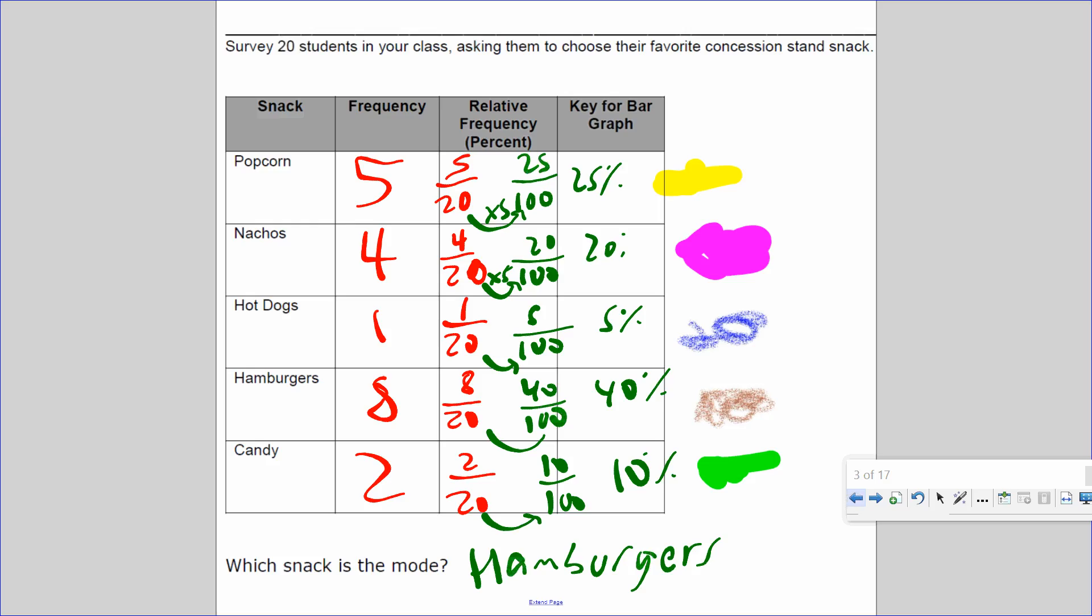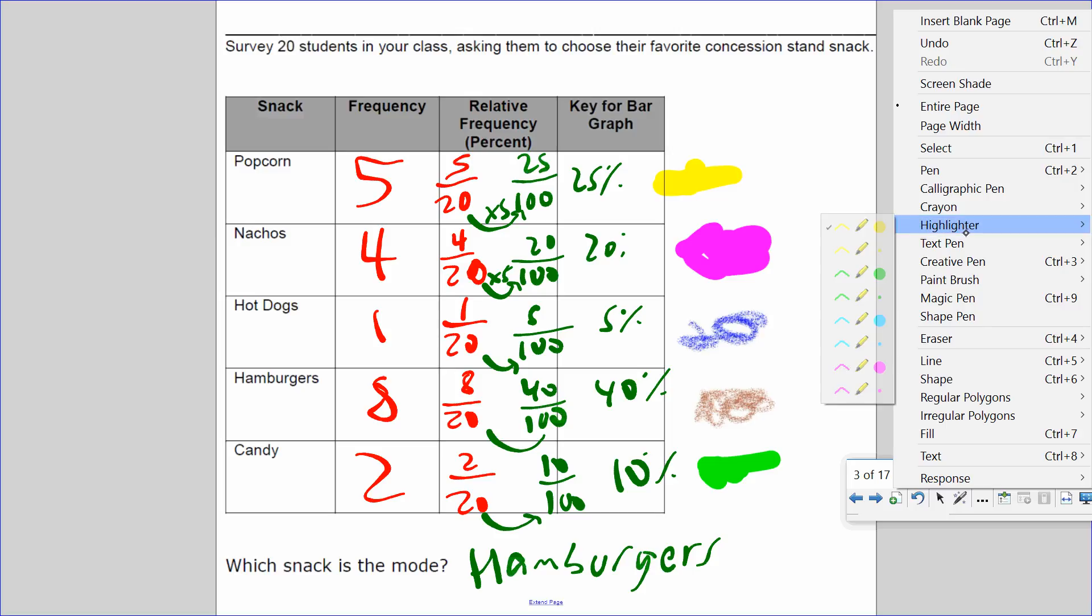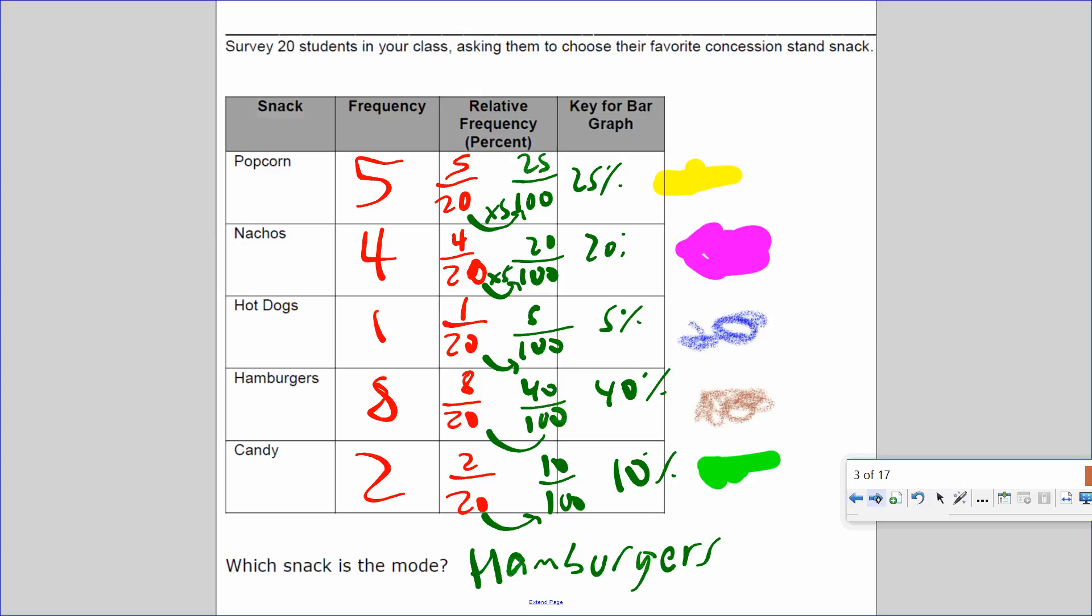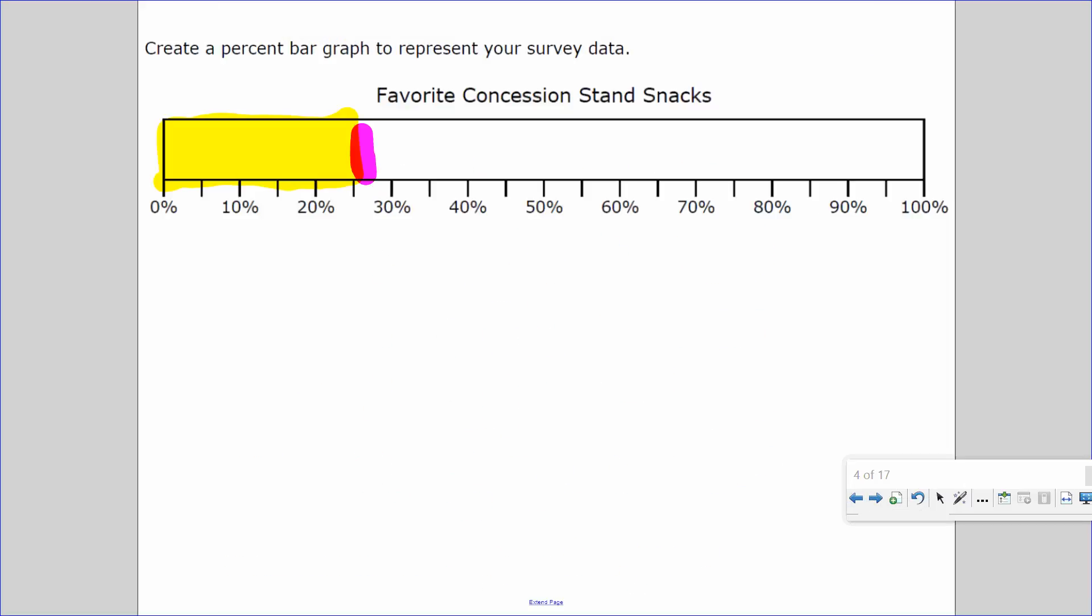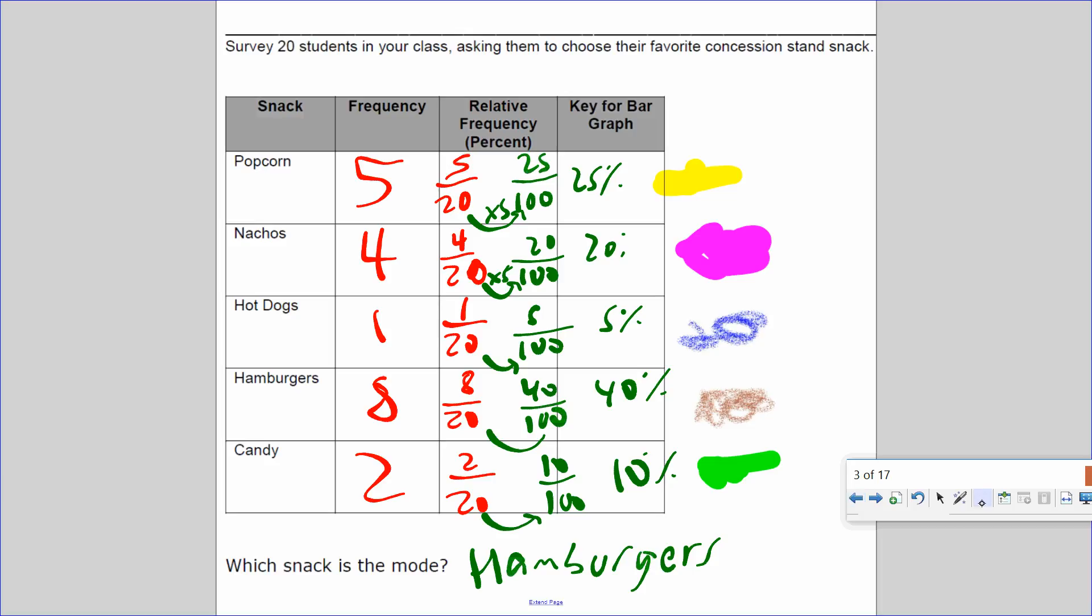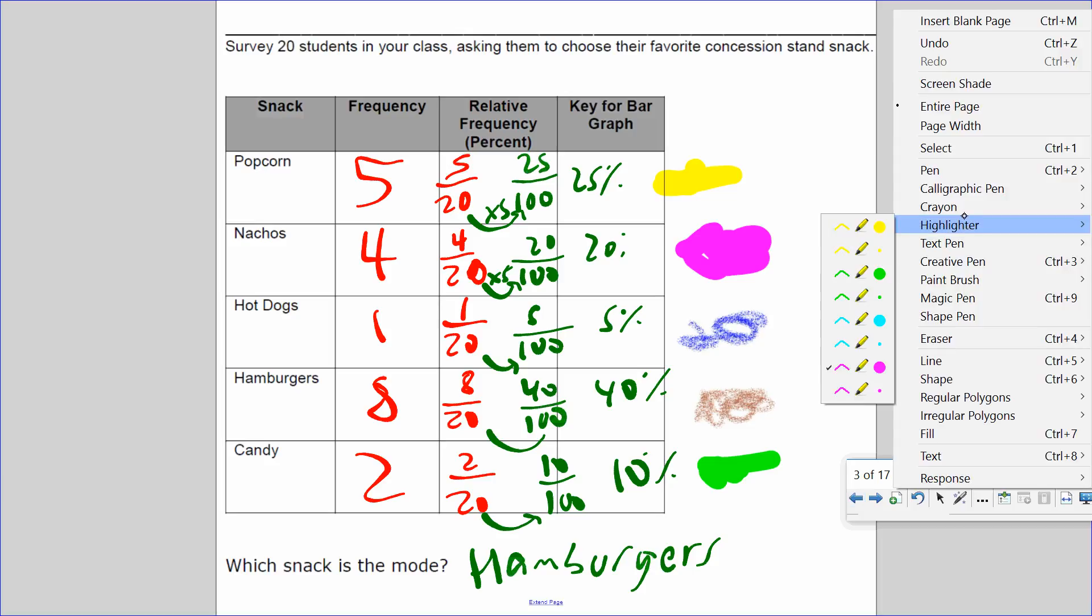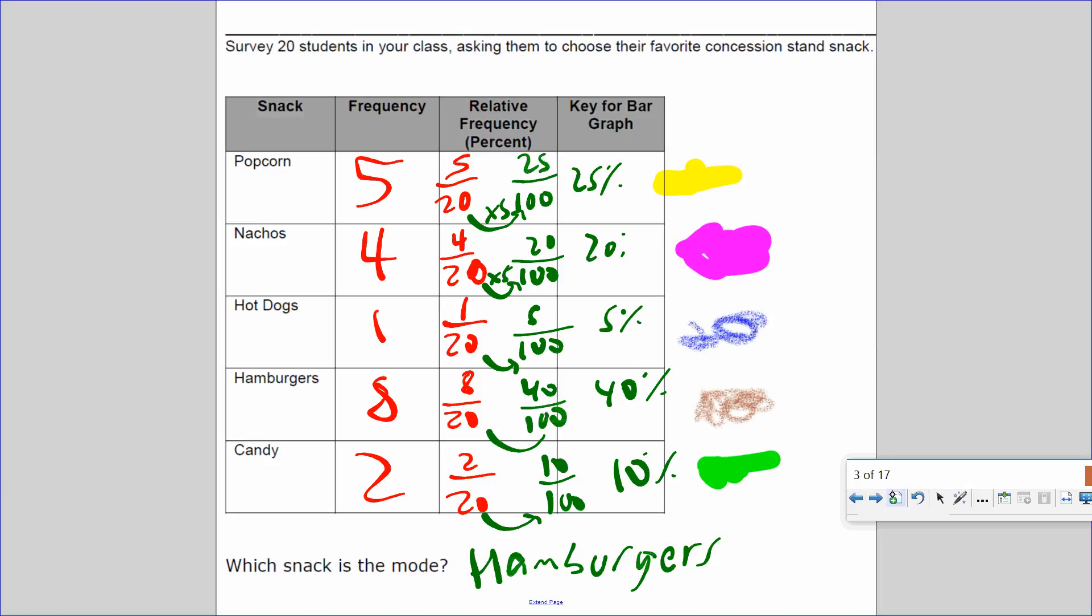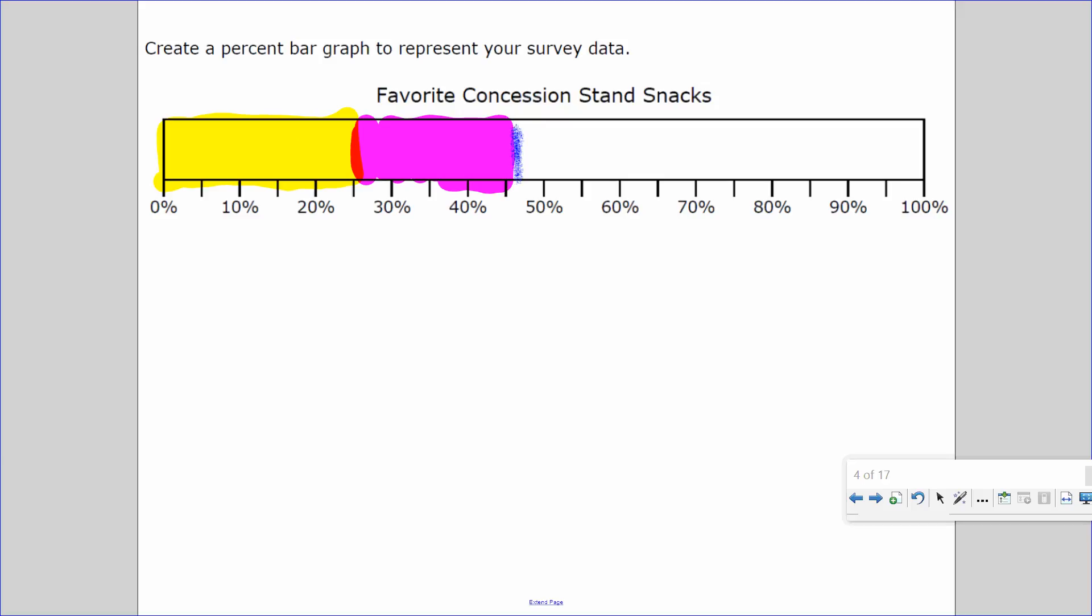Let's go back. 20% chose nachos. We're going to be using the purple pen. So 20%, counting by 5: 5, 10, 15, 20. So that goes right there. 5% chose hot dog. That would be the blue.